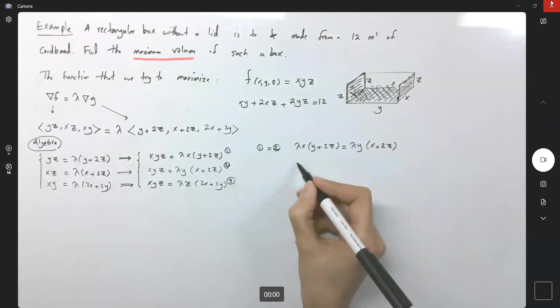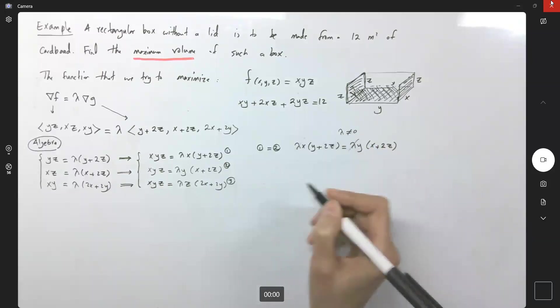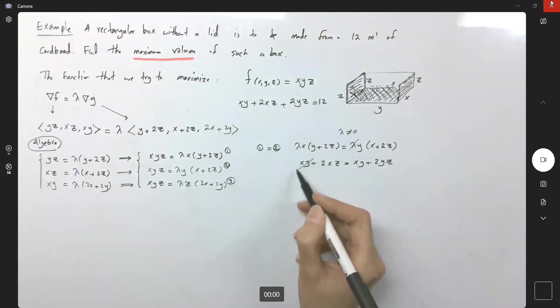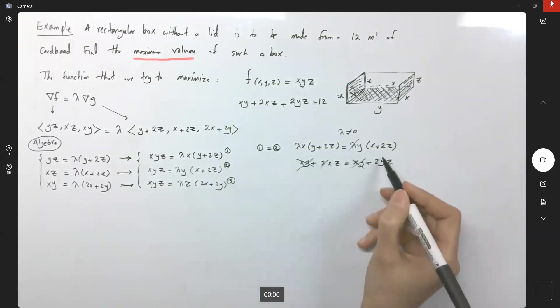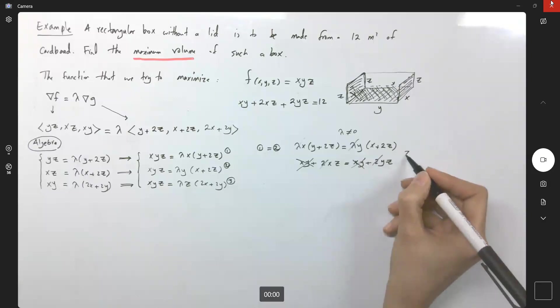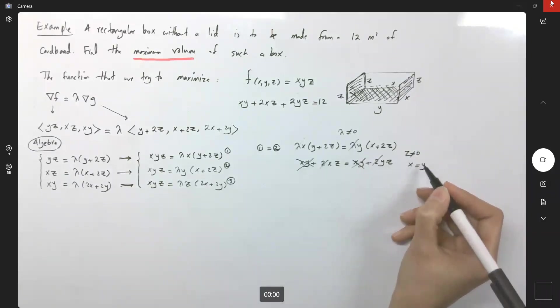We have, we can cancel, if lambda is not equal to zero, we can cancel our lambda and lambda. We get x, y plus two x, z equals to x, y plus two y, z. Ooh, x, y and x, y, they get cancel out. Two and two, they get cancel out. And here you have z and z. If they are not equal, if they are not zero, if z is not equal to zero, then x is y.